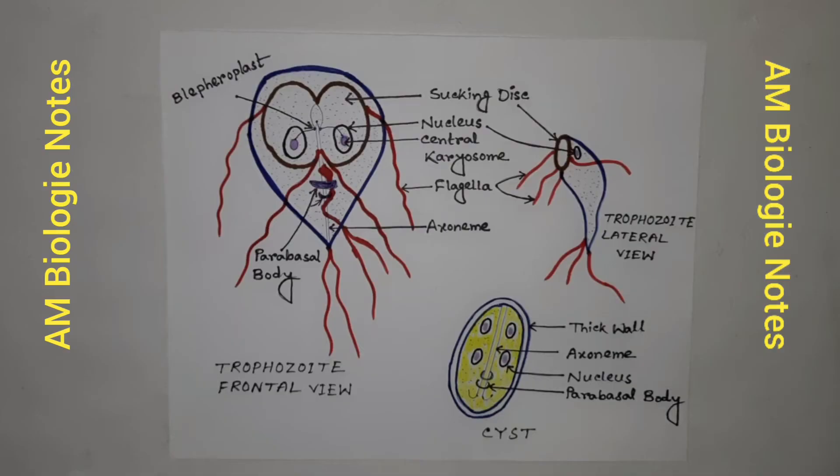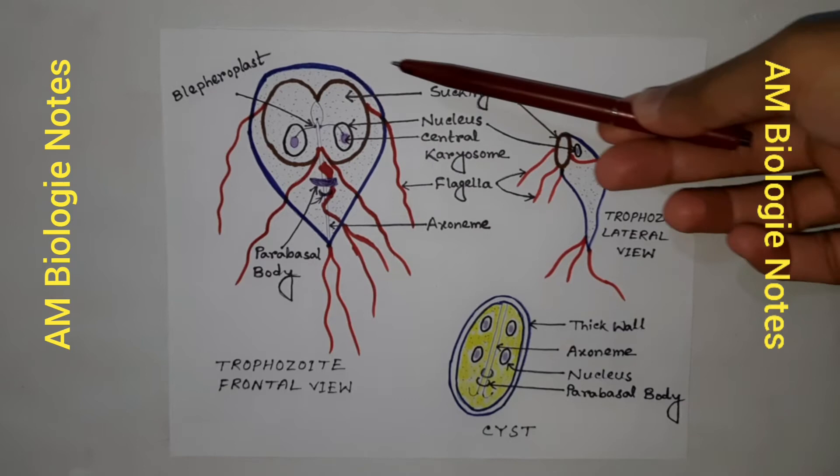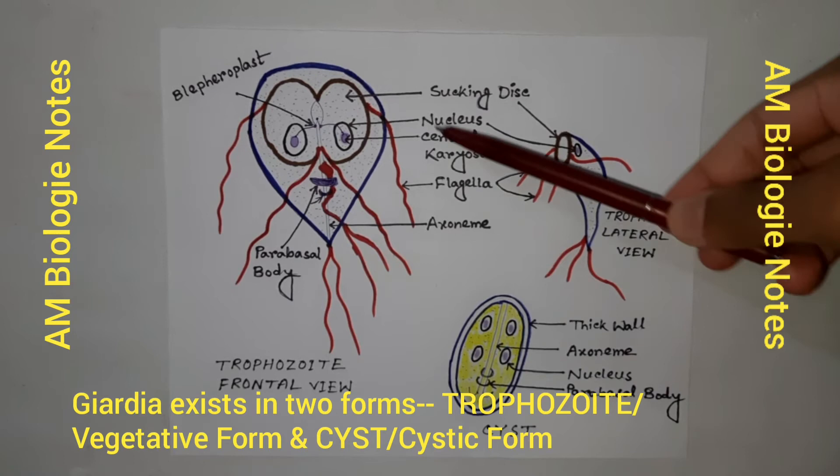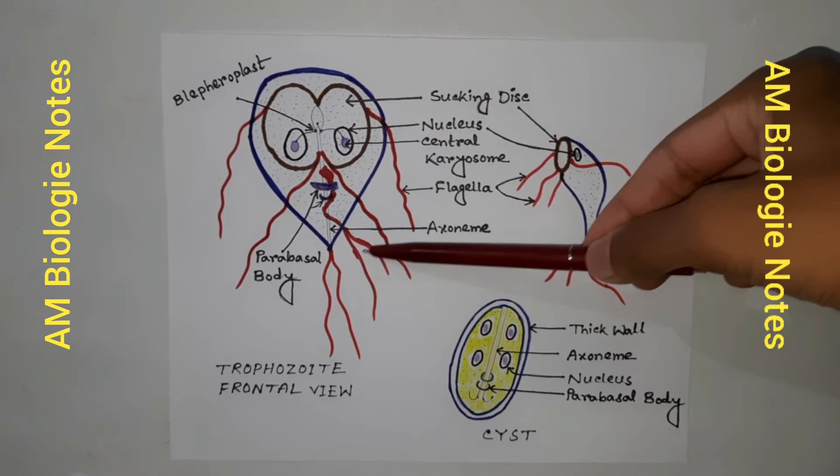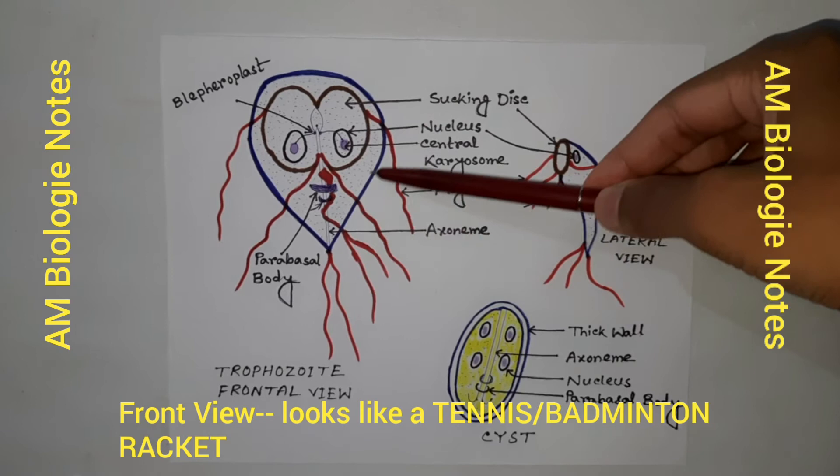In this diagram, I am showing you the detailed morphology of Giardia intestinalis. It exists in two forms: the trophozoite or vegetative form, and the cystic form. This is a figure of the trophozoite of Giardia. In front view, the shape of the trophozoite is like that of a tennis or badminton racket.